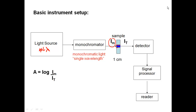Only that cross-section of the sample that the light is going through is absorbing the light — not the entire sample, just that area. Then we measure the intensity of light after. That goes to the detector, the signal is processed, and the reader reads out the absorbance. The absorbance relationship is given by the equation A equals log of I_m divided by I_t, where I_m is the monochromator intensity and I_t is the transmitted intensity.